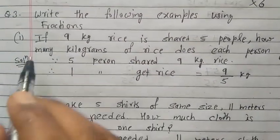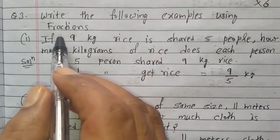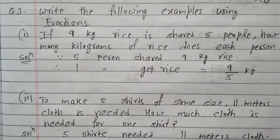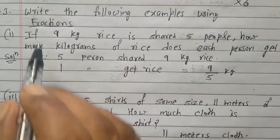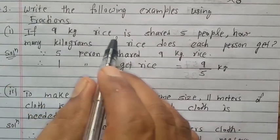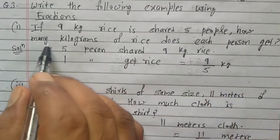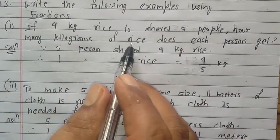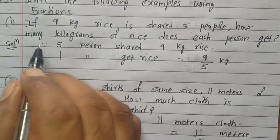Now Question Number 3. What is Question 3 here? Write the following example using fractions. So here what problem is given? Read the problem and we convert into fractions. Now what is the first question? If 9 kg rice is shared among 5 people, how many kilograms of rice does each person get? So how to write the solution? Write down.